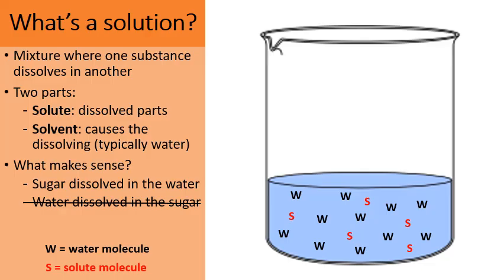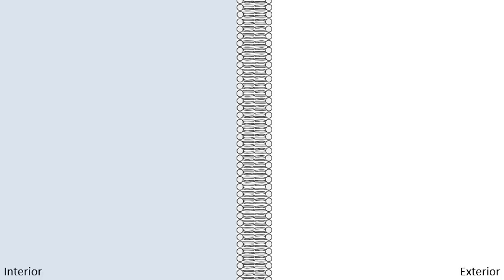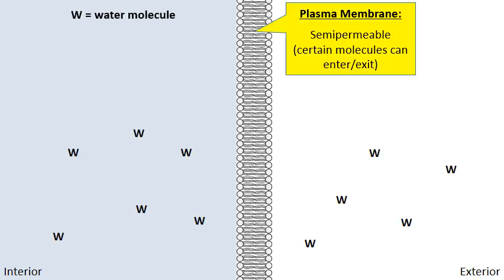Here's a cell, and if we zoom into this area of the cell membrane, we see the phospholipid bilayer — the plasma membrane. You might know that it is semipermeable, meaning that certain molecules can pass freely but others cannot. Let me add some water molecules on both sides of the plasma membrane.